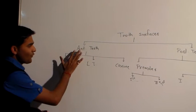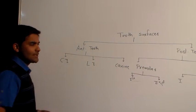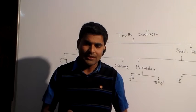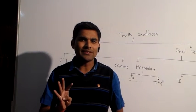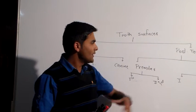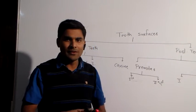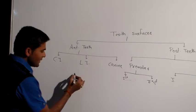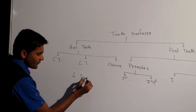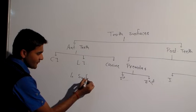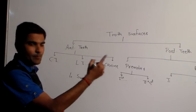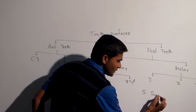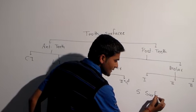For anterior teeth, there are four surfaces. While for posterior teeth, there are five surfaces. So: four surfaces in anterior teeth and five surfaces in posterior teeth.